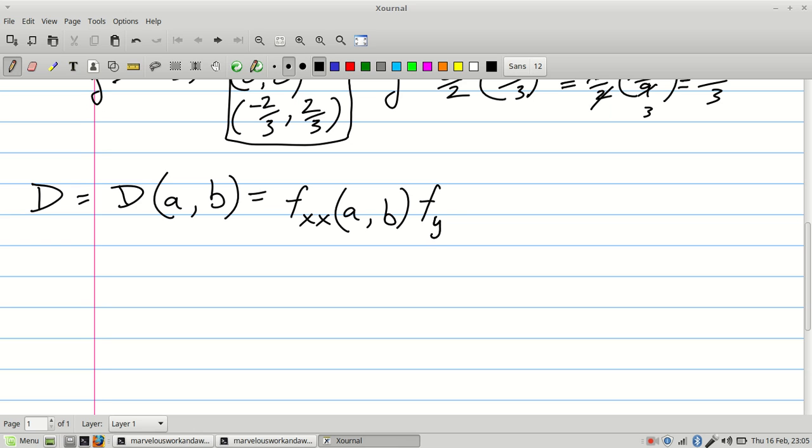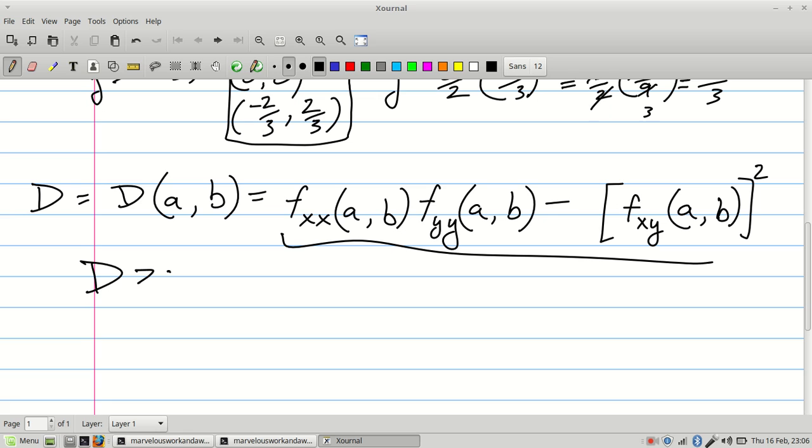...times the second order derivative in Y at that critical point, minus the derivative that's commutative, XY, at AB squared. So if this thing turns out to be positive, then I've got a local minimum at AB. If D is greater than 0 and Fxx is greater than 0, then you've got a minimum.